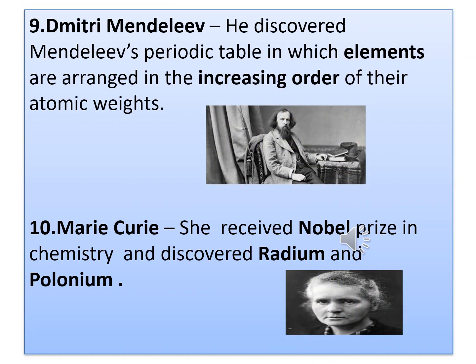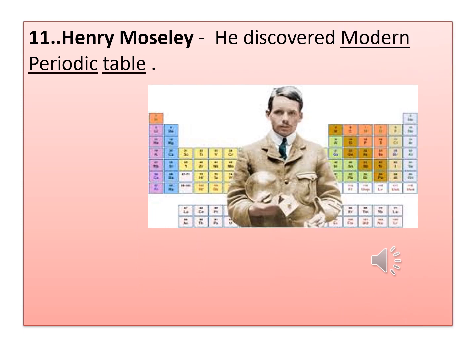Our next chemist is Dmitri Mendeleev, who discovered Mendeleev's periodic table, in which elements are arranged in increasing order of atomic weight. The tenth chemist is Marie Curie, who received the Nobel Prize in Chemistry and discovered two elements: radium and polonium. These elements are highly reactive in nature. The eleventh chemist is Henry Moseley, who discovered the modern periodic table. There are 118 elements found in nature, and he arranged them according to their atomic number, dividing them into groups and periods.